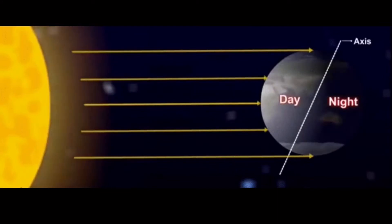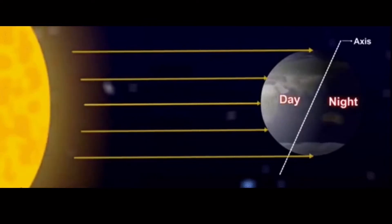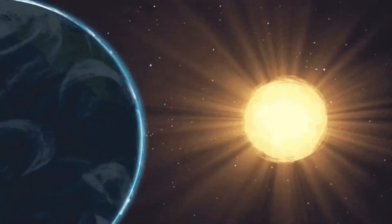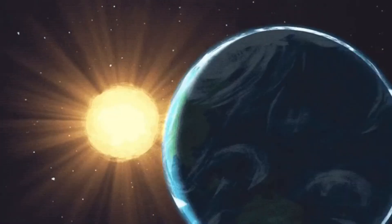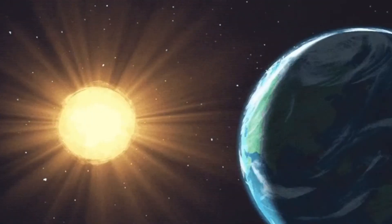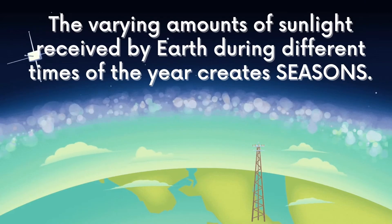The Earth is always pointing to one side as it goes around the sun. When the side of the Earth points towards the sun, we experience daytime, while when it points away from the sun, we experience nighttime. Our planet completes one revolution around the sun in 365 and one-fourth days, which corresponds to the length of one year. The varying amounts of sunlight received by Earth during different times of the year creates seasons.